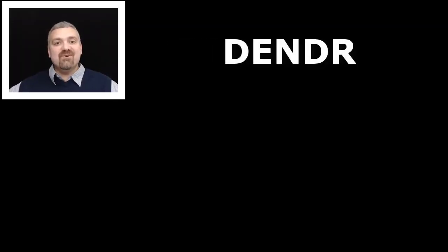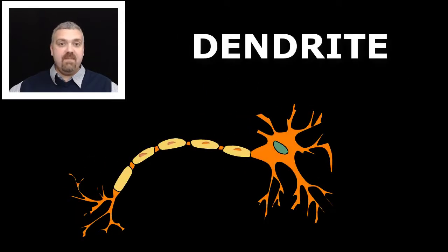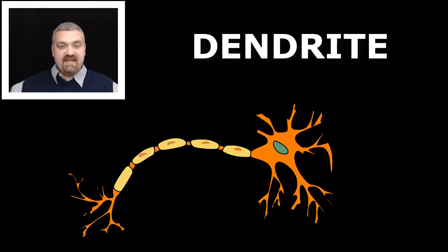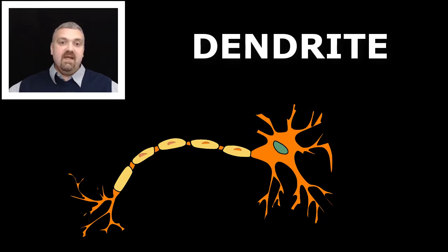Next, we have 'dender,' which means tree. We have the dendrites — tree-like branches of a nerve. Up to 75% of the surface area of a neuron will be dendrites. Whereas a nerve typically has just one single axon, it can have thousands of dendrites. Some neurons in your cerebellum can have up to 100,000 different dendrite connections. This is the branch-like portion of a neuron that receives information and carries it to the cell body where it can be processed.